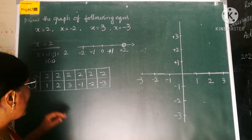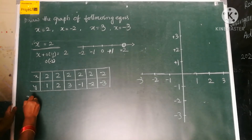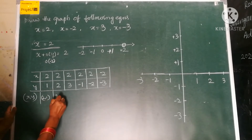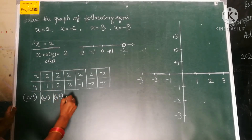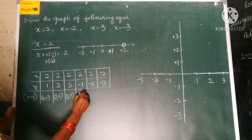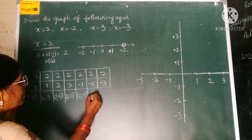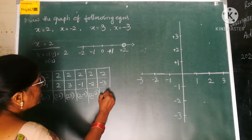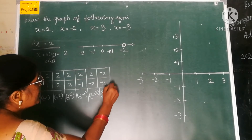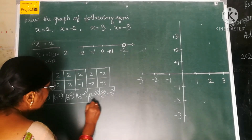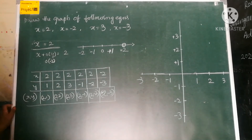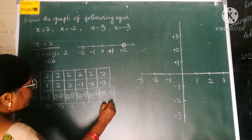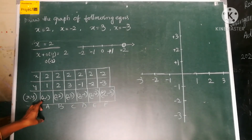Now let us represent this on the graph. We have to plot the points: (2, 1), (2, 2), (2, 3), and so on. Let us name the points A, B, C, D, E, F. The first point A is (2, 1).